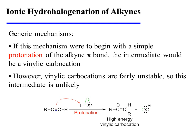Let's first consider a generic mechanism for the ionic hydrohalogenation of alkynes. If this mechanism were to begin with a simple protonation of the alkyne pi bond, the intermediate would be a vinylic carbocation. However, vinylic carbocations are fairly high in energy, and therefore this intermediate is unlikely.